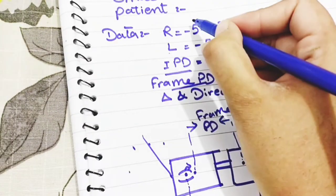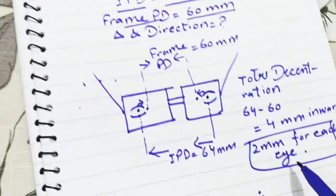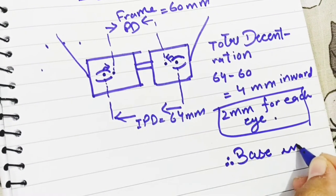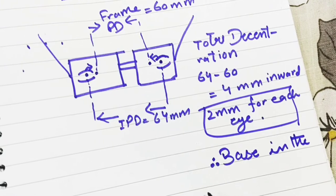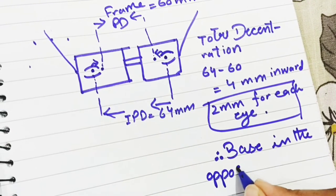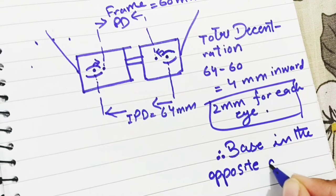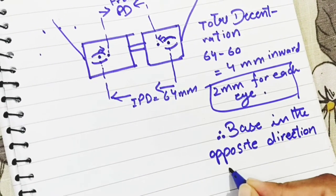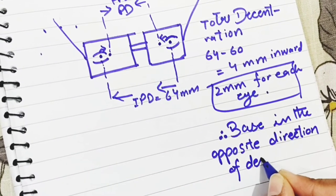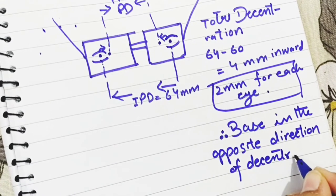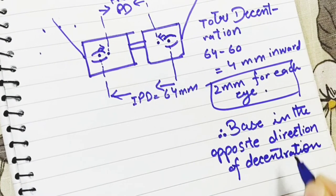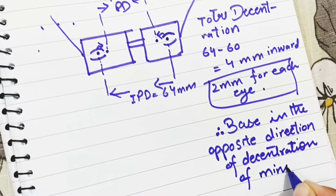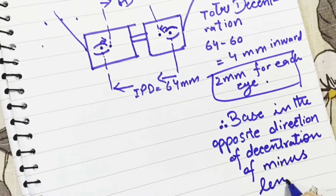In case of a minus lens, the base is in the opposite direction of decentration. While in the case of a plus lens, the base is in the same direction of decentration.